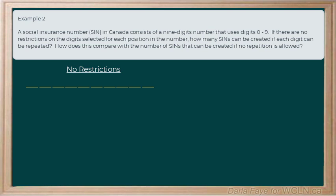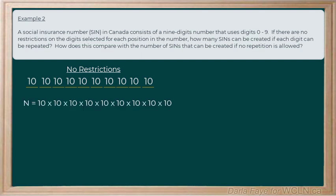Now, because it's possible for me to use all digits from zero through nine for each of these blanks, there's going to be ten possibilities that can go in each of these blanks. So, in order to determine the total number of SIN numbers, we simply need to go ten times, ten times, ten, nine times.